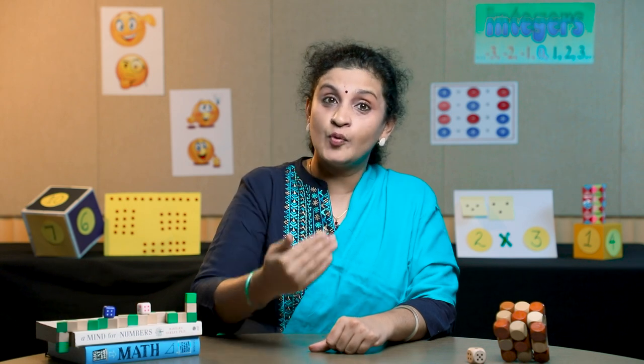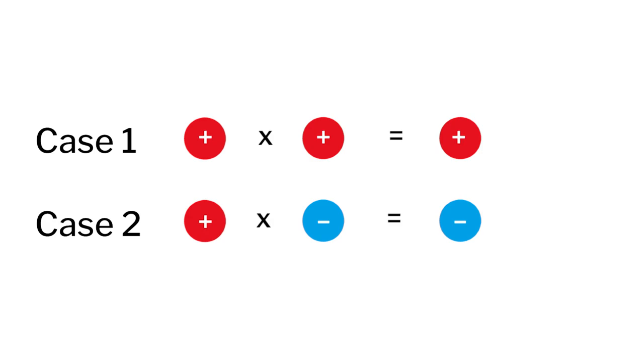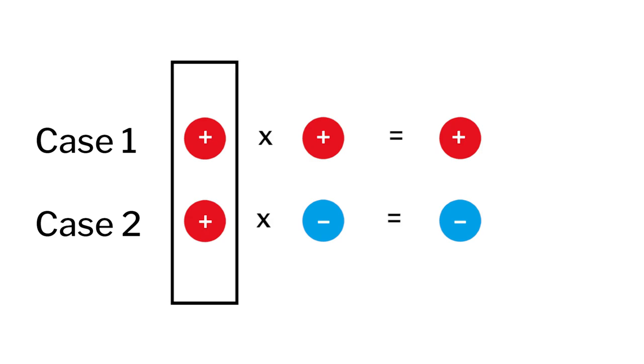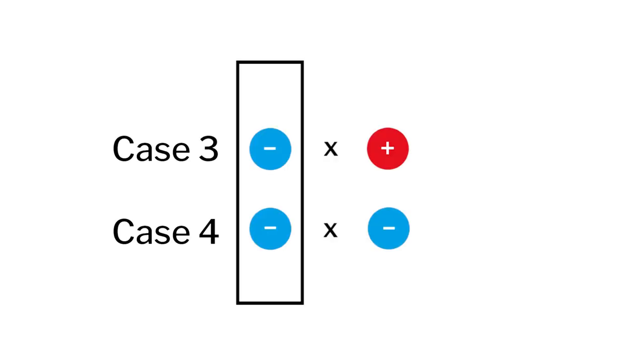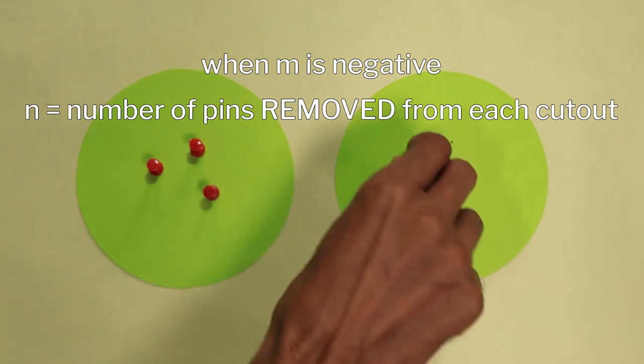Now, in the next two cases where we will be removing pins and cutouts from the integer bank, it could be a bit tricky. I ask the students what would be the value of a blank integer bank and an integer bank with several zero sets. Remind students that when our first integer was positive, we were adding pins. Now, in the next two cases, when our first integer will be negative, we will be removing pins.